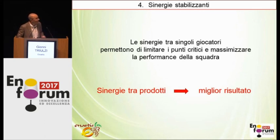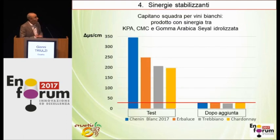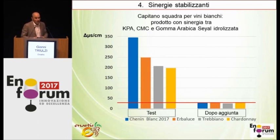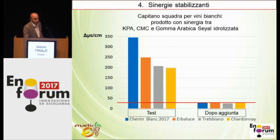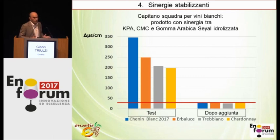In the short time I have left, I will present the leaders of these two teams. For white and rosé wines, this product includes KPA, CMC, and Arabic rubber — which is Seyal, hydrolyzed Seyal — and putting everything together we have very high stability. The Delta Metro CIMEC was used to assess stability and instability. You see how high these levels are: the Chenin Blanc 2017 from South Africa has 350 Delta Micro CCMs. Adding the product, you can achieve stability in all four wines tested, even starting from extreme levels of instability. This is a huge opportunity.